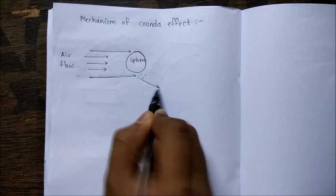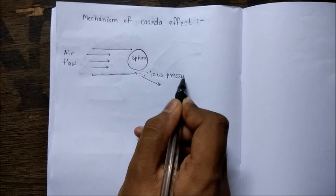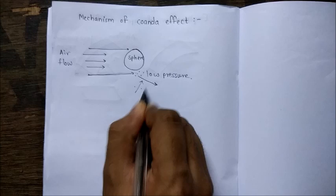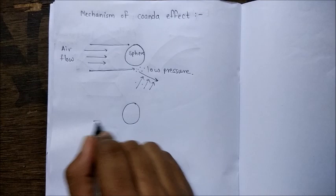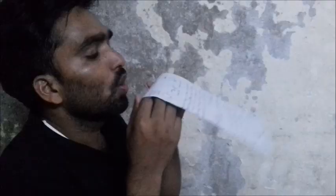Now as there is a low pressure region here and high pressure region here, the pressure difference in this direction pushes air molecules over here upwards. So this causes the air flow to bend around the sphere. This is what's called the Coanda Effect.